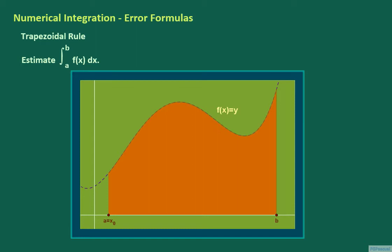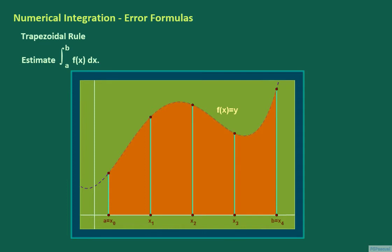x sub 0 is followed by the partition points x sub 1, x sub 2, x sub 3, and just for the sake of illustration, we will use four subintervals, or n equals 4, in which case x sub n equals x sub 4 equals b. In the case when the integral does represent the area between the graph of f and the interval a to b, we estimate the area underneath the graph of f over each subinterval. As the name of the rule suggests, we use trapezoids, one over each subinterval, to estimate the area over each subinterval.